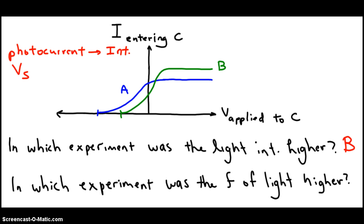What about the second question: in which experiment was the frequency of light higher? We answer this by considering the left half of the graph. The higher the frequency, the more energy electrons will have, and the larger the stopping voltage we will have to apply to halt those fast electrons. In other words, the higher the stopping voltage, the higher the frequency. We see that A has a much larger opposing voltage and B has a smaller stopping voltage, so the answer is A — because the stopping voltage is higher for A.